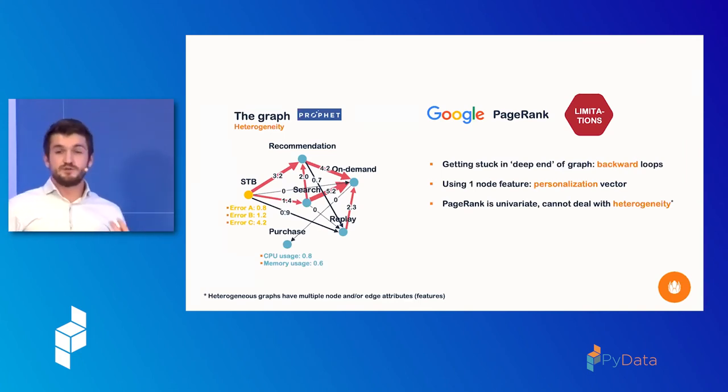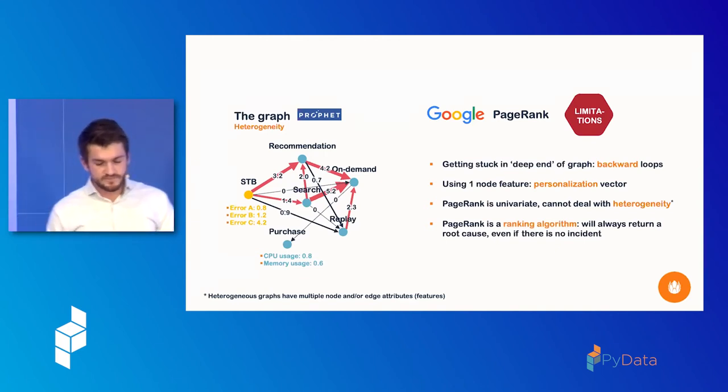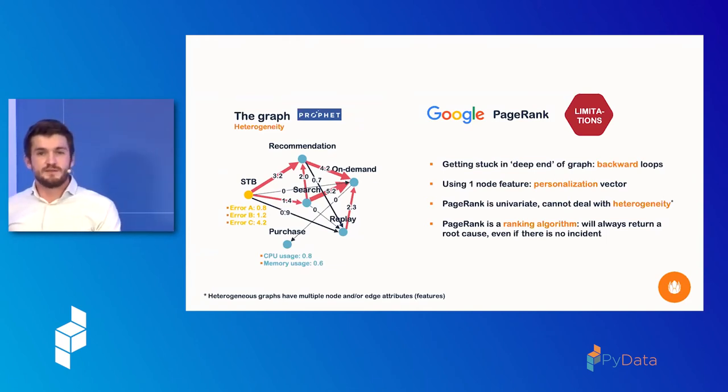So in our case, we have these two types of nodes. We have the set-top box, which generates completely different data than all these microservices. And this is something that the PageRank algorithm is not meant to handle. And one last point is it's essentially a ranking algorithm. So it will just tell you, it will give you a proportion of how important all the nodes are, but it won't tell you anything about if there is an issue going on in general. In our use case, we have some incidents, but sometimes, actually most of the times, there's not an incident. So we're not interested in finding the most important or the most failing service. We're interested in knowing if a service is failing.